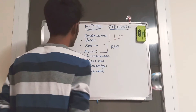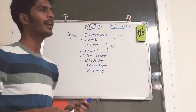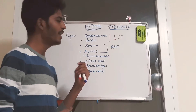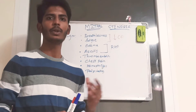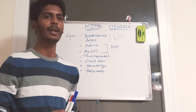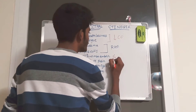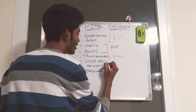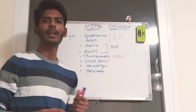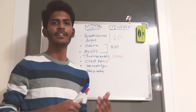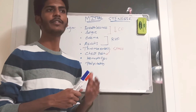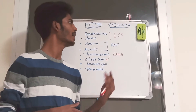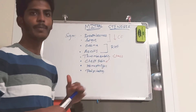Thromboembolic complications occur because there are structures in the atria called appendages, which are sac-like structures. When there is atrial dilation, stasis of blood leads to thromboembolism. Chest pain is caused by thromboembolic symptoms. Hemoptysis is due to pulmonary hypertension and pulmonary edema. Palpitations are due to atrial dilation causing atrial fibrillation.